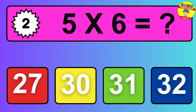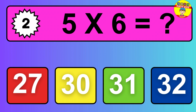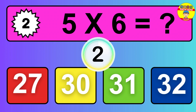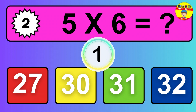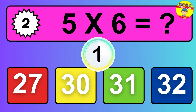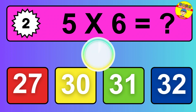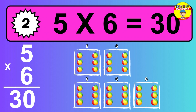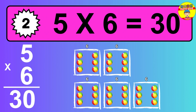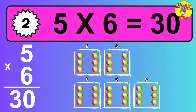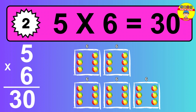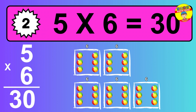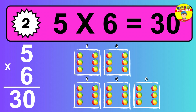Question 2. 5 times 6 equals what? So the answer is 5 times 6 is 30. To calculate, we have 5 groups with 6 balls each one. So how many balls do we have? 30 balls.